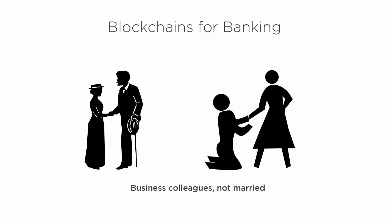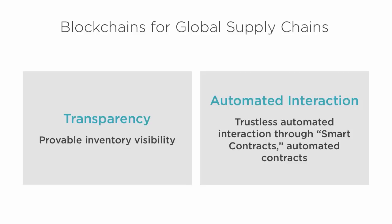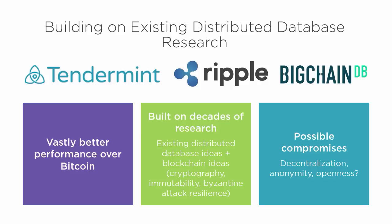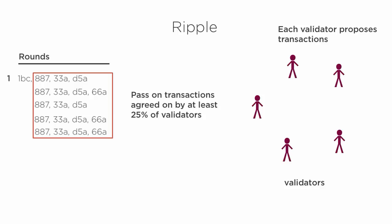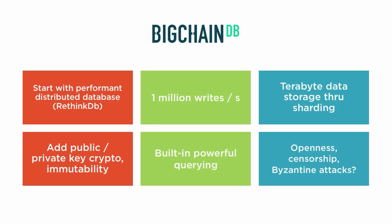Next, the module talks about private or permissioned blockchains, or ones that aren't completely open. These are being experimented with by banks, corporations, and even governments. I attempt to answer the question: is a private blockchain any different or better than a distributed database? And speaking of databases, I cover Tendermint, Ripple, and BigchainDB — three systems that strive to vastly improve the performance of Bitcoin by utilizing the results of decades of distributed database research.